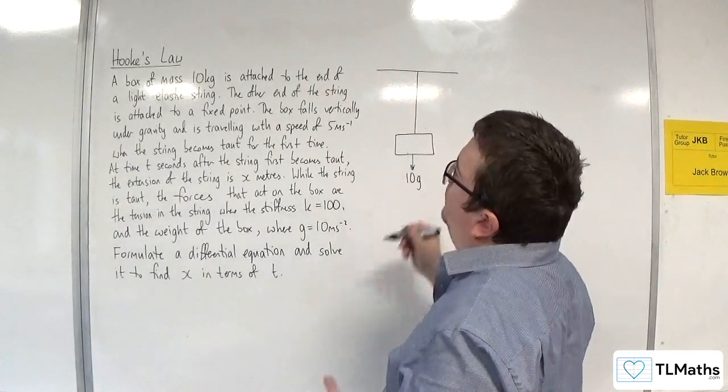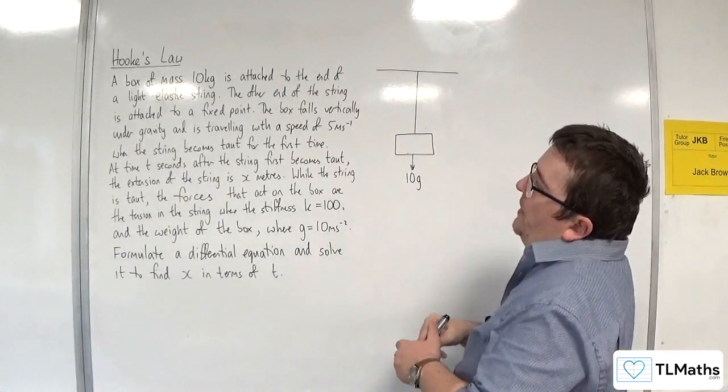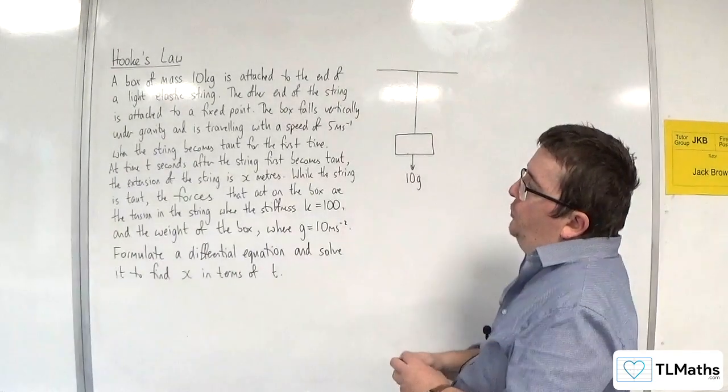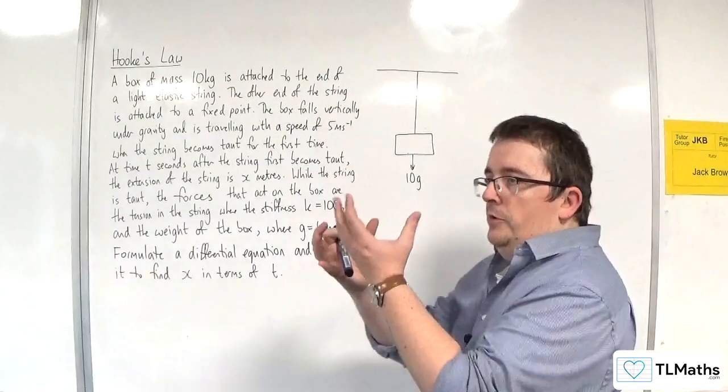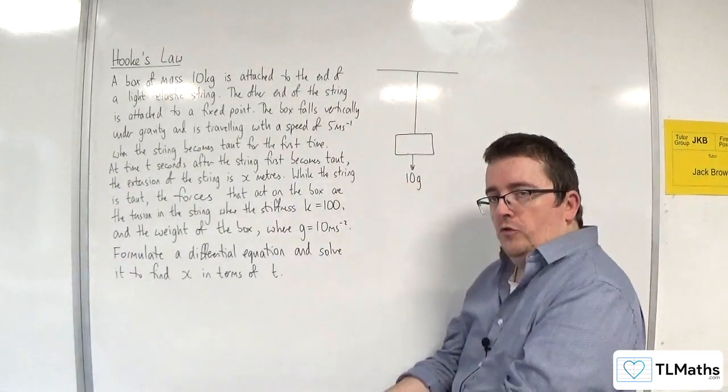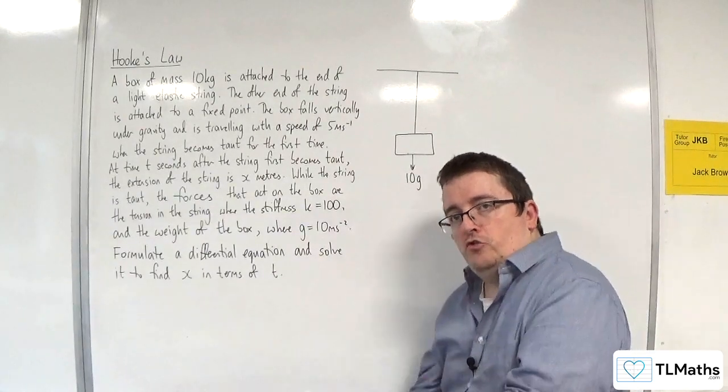It's got a weight of 10g. The box falls vertically under gravity and is traveling with a speed of 5 meters per second when the string becomes taut for the first time. So it's dropped, and then it gets to this point where the string goes taut, and then it's going to stretch after that.